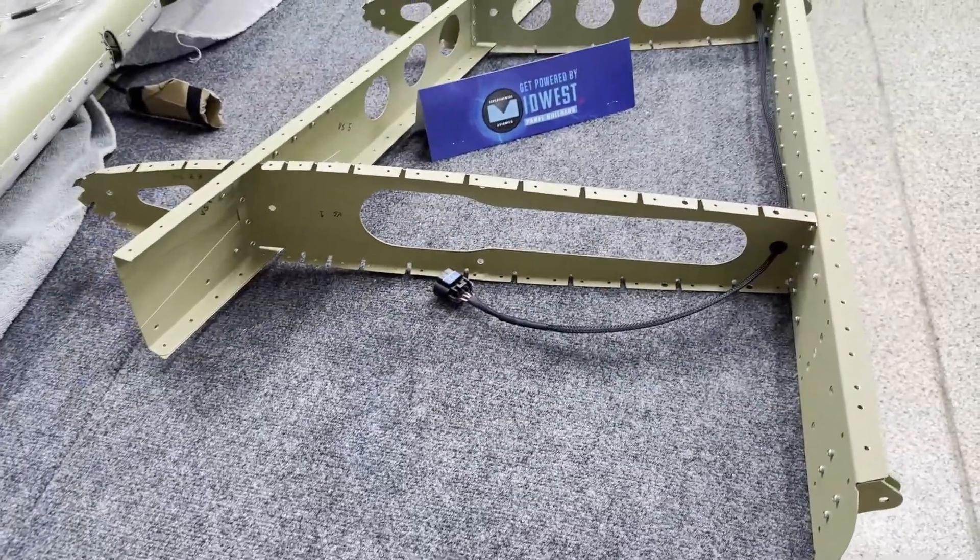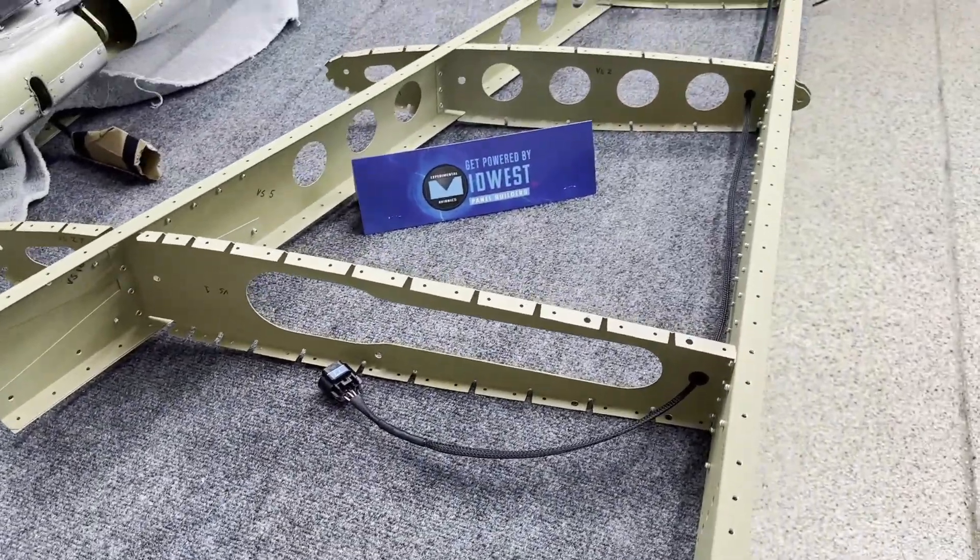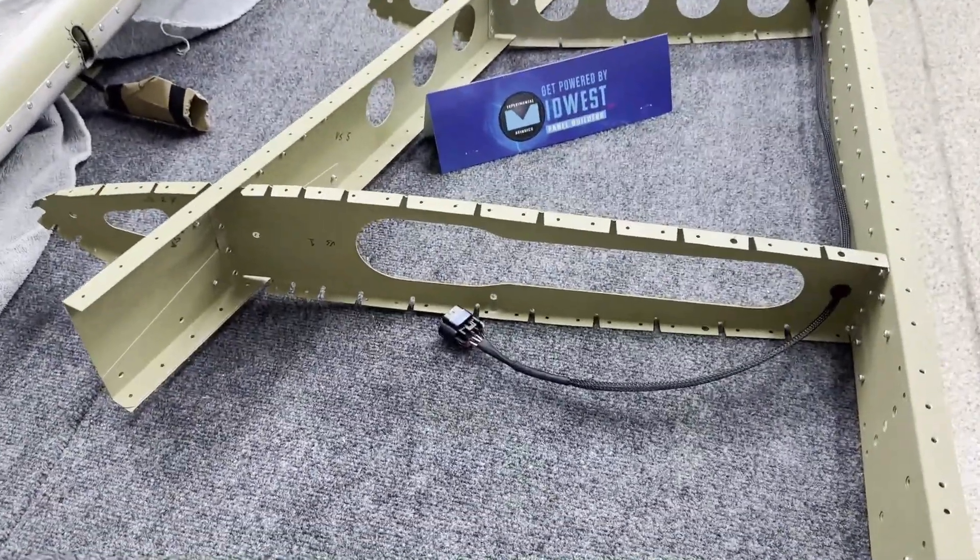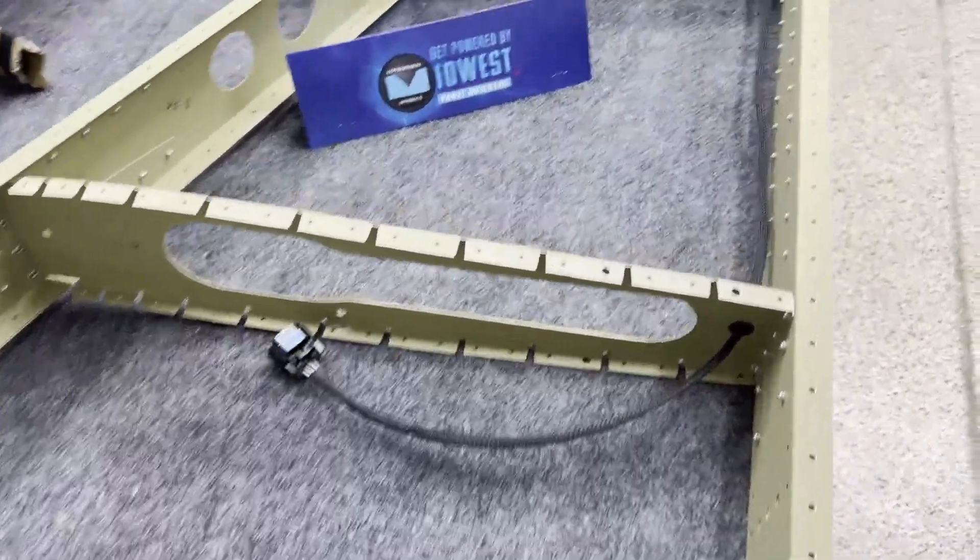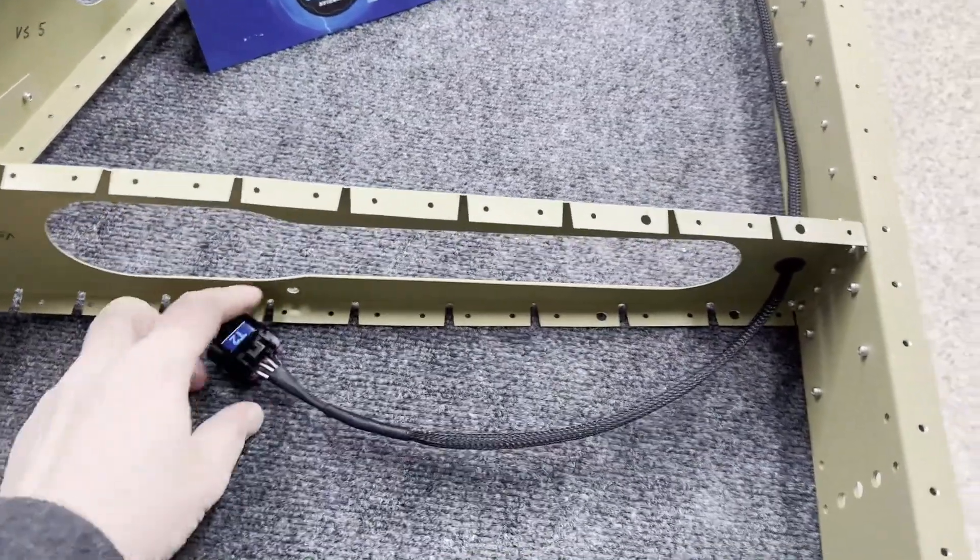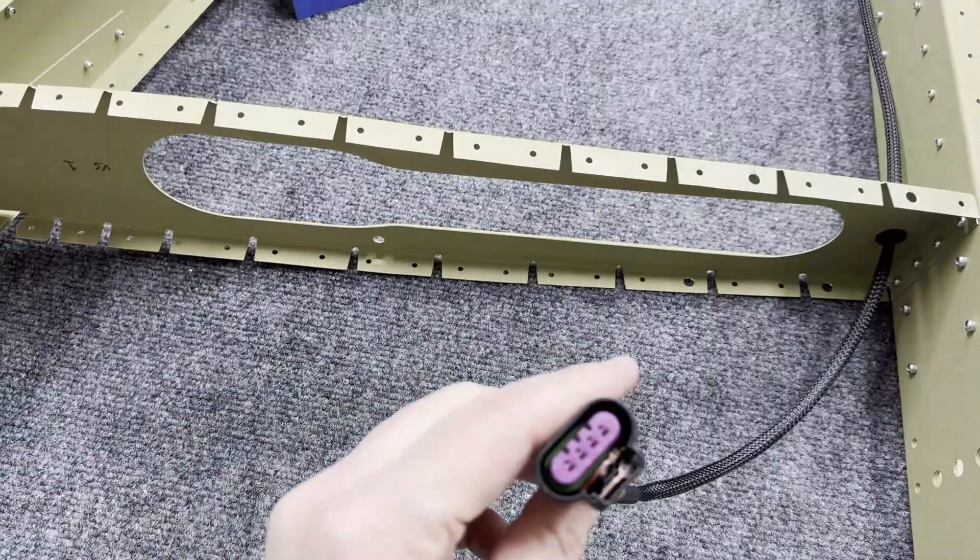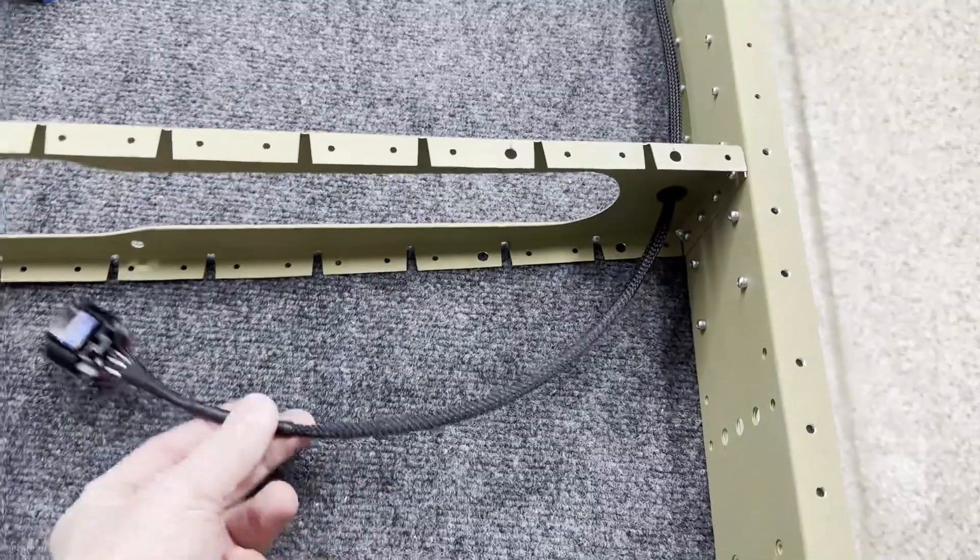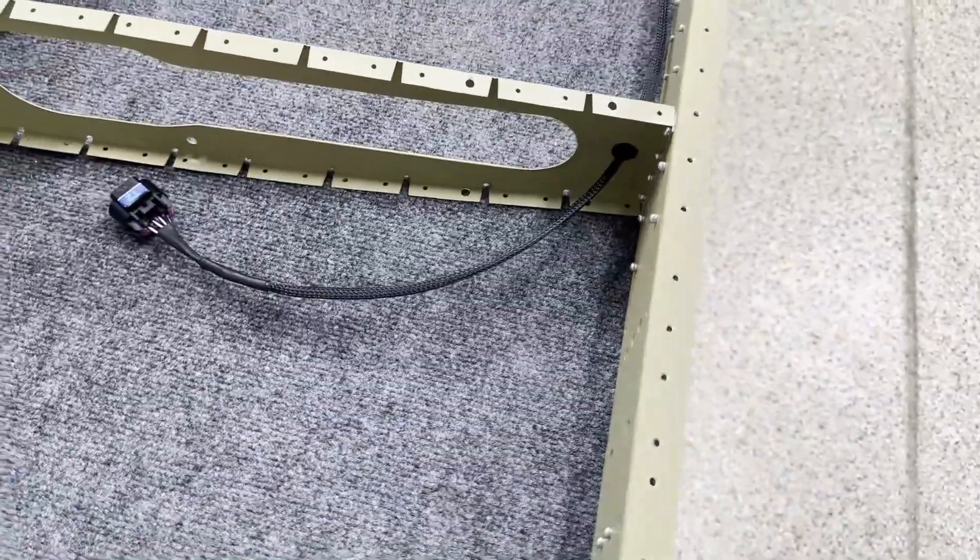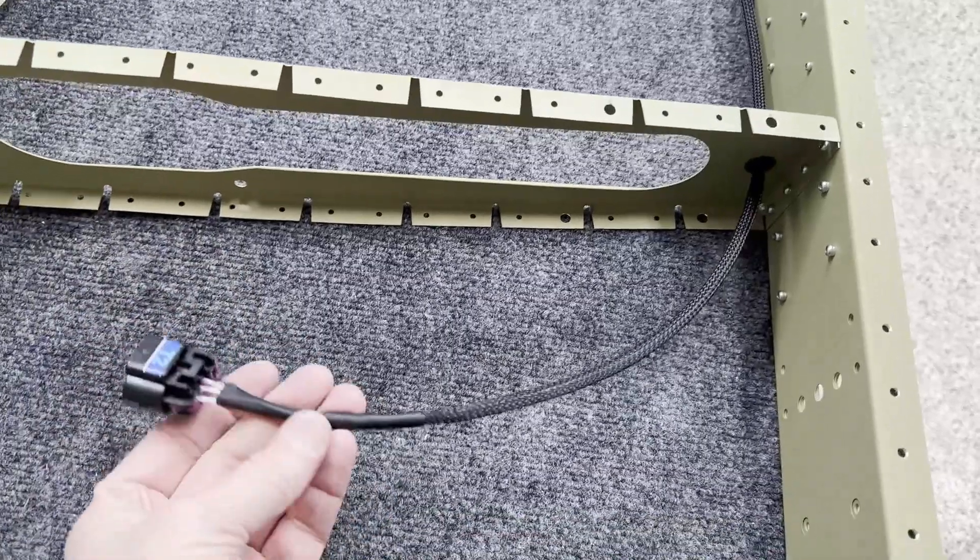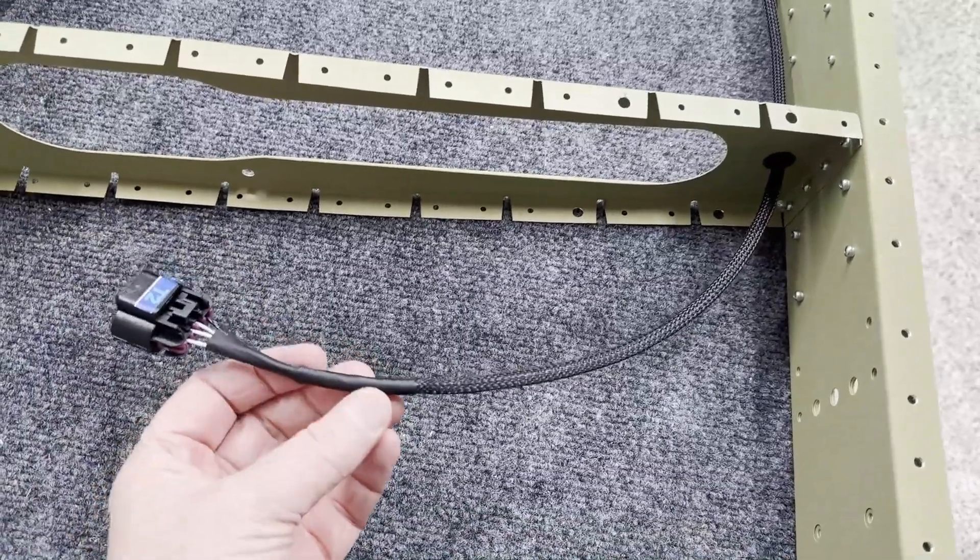All right guys, so this is obviously the vertical stabilizer. I'm using Midwest Panel Builders cabling. They're great - they come with these connectors already done. I've added some wiring covering just to help it for its lifetime, and also transitioned with a heat shrink here as well.